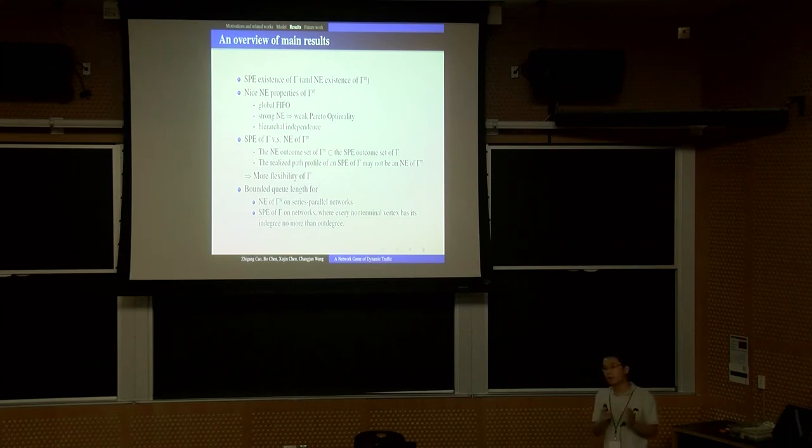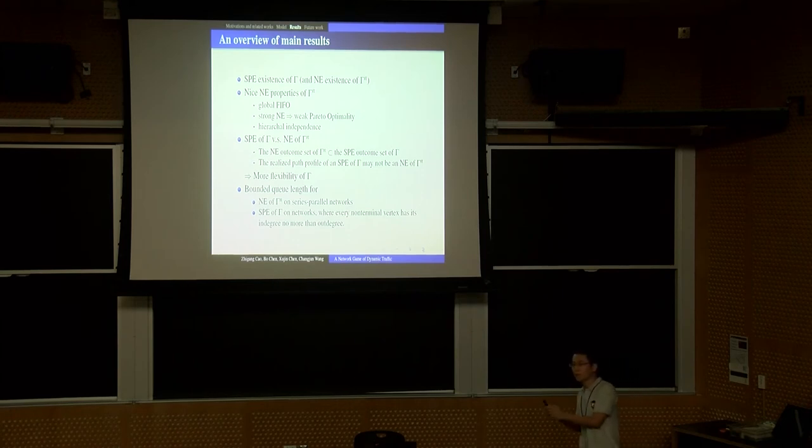Note here, edge priority also plays a quite important role. If we use player priority to break ties, then the nice properties may still not hold. Then using these nice properties, we prove, given any Nash equilibrium of the simplified game Gamma N, we can construct an SPE strategy of the game Gamma such that the SPE will exactly induce the same Nash equilibrium.